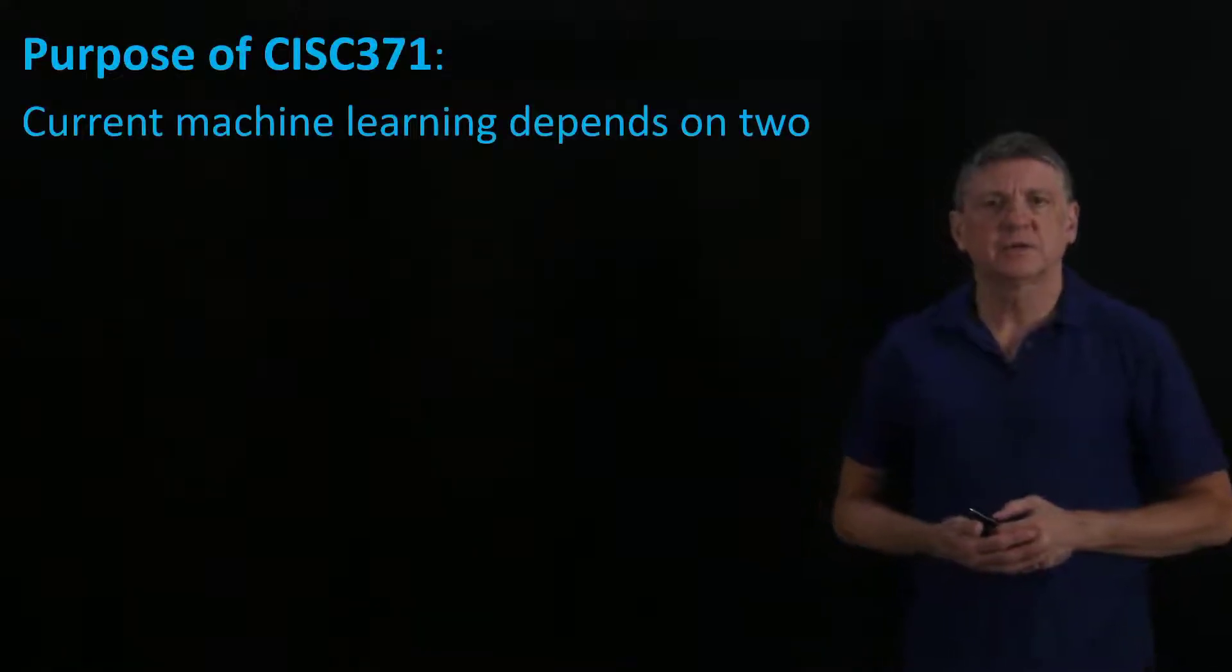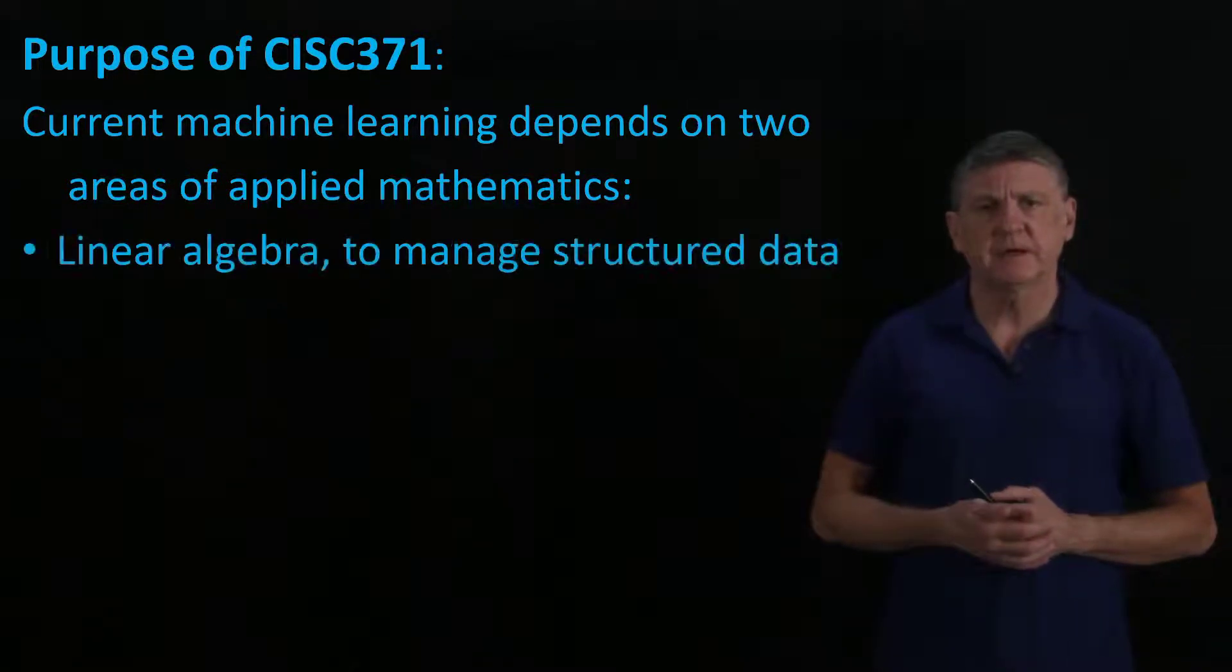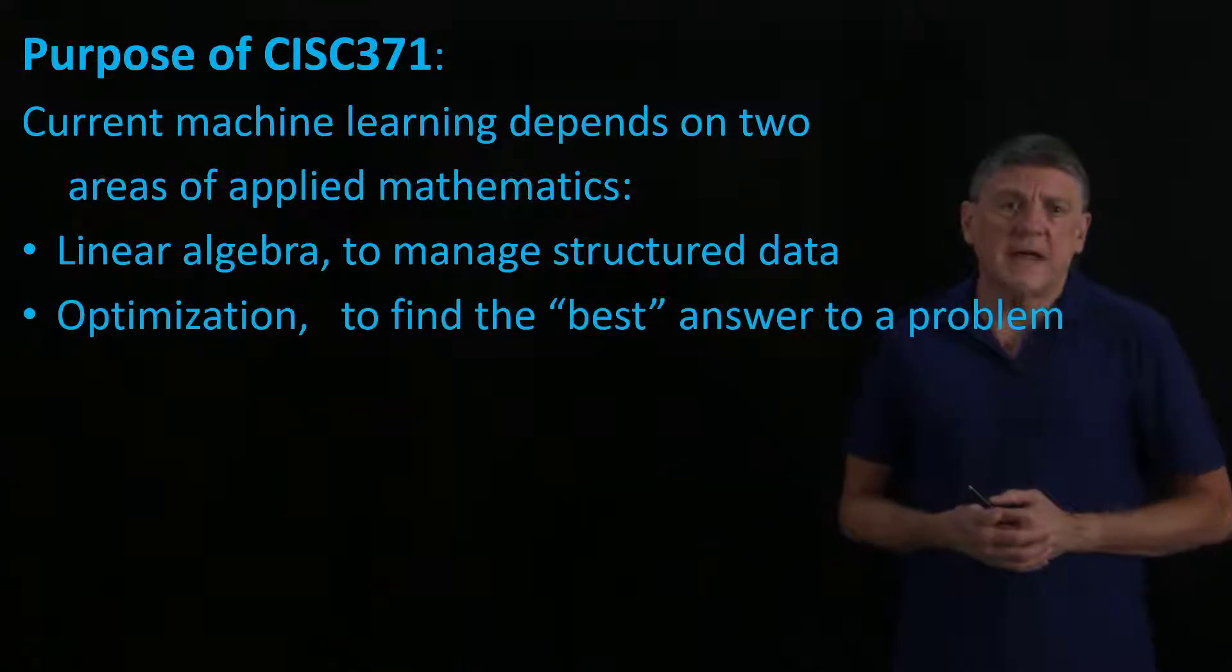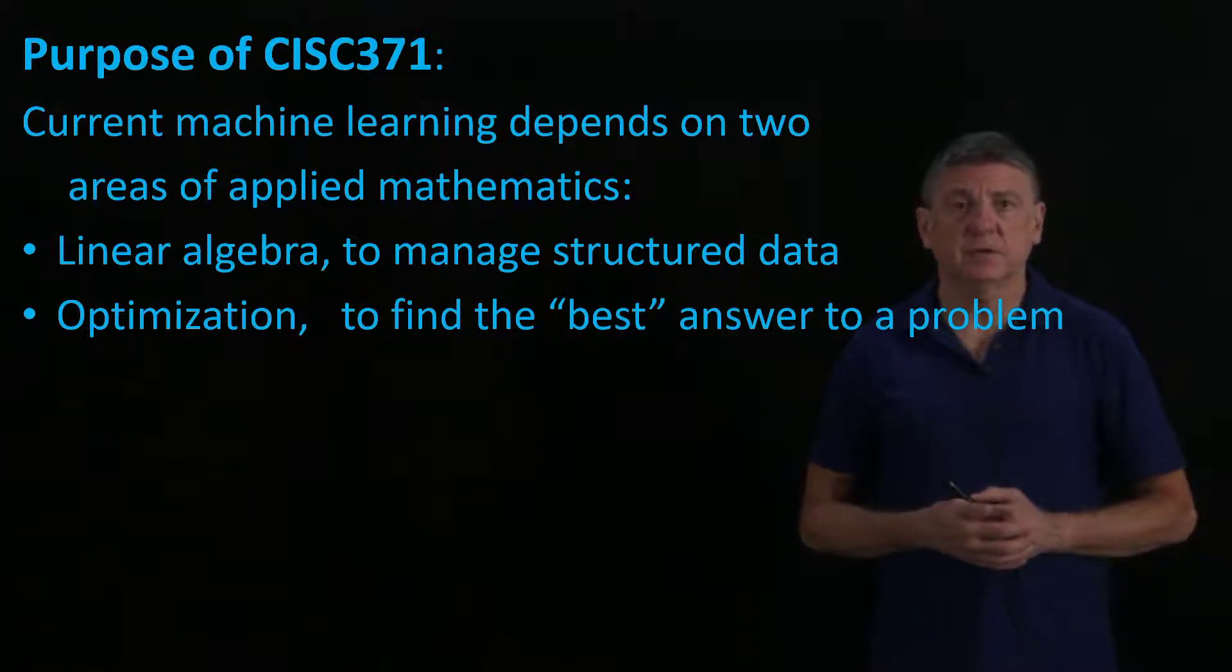The idea behind this course is to look at current machine learning. Machine learning, as currently implemented, depends on two areas of applied mathematics. The first is linear algebra, which in prerequisite courses you learned how to use to manage structured data. We're going to add to that an understanding of optimization. Optimization means we want to find a best answer, and best is going to be defined numerically.